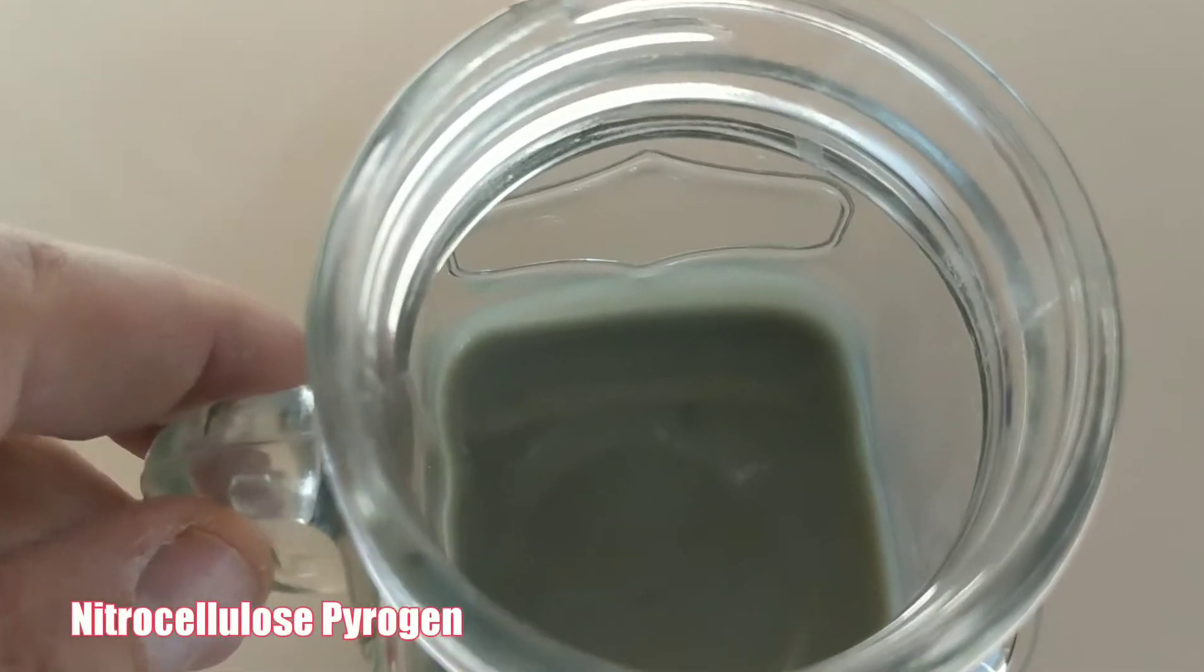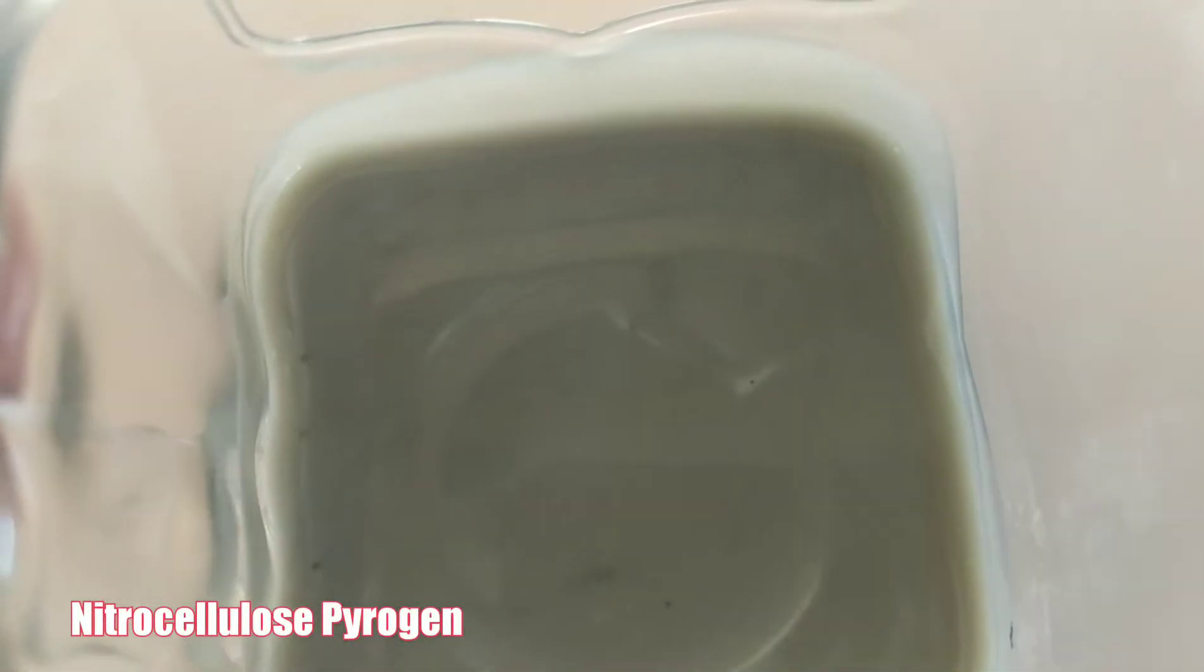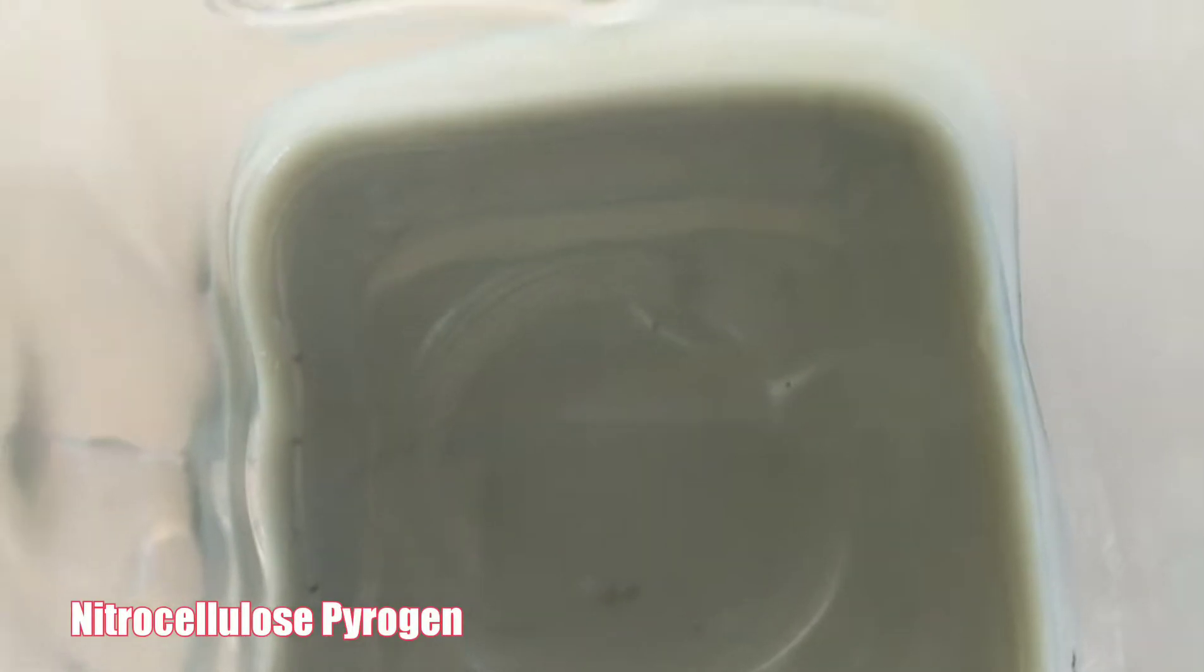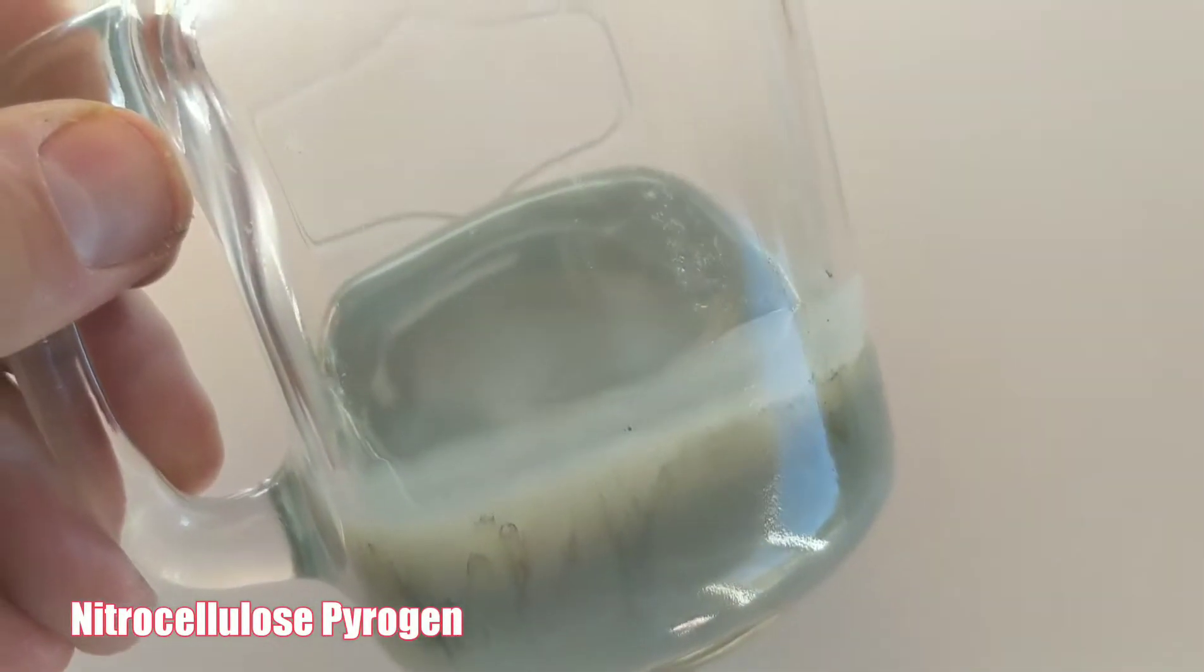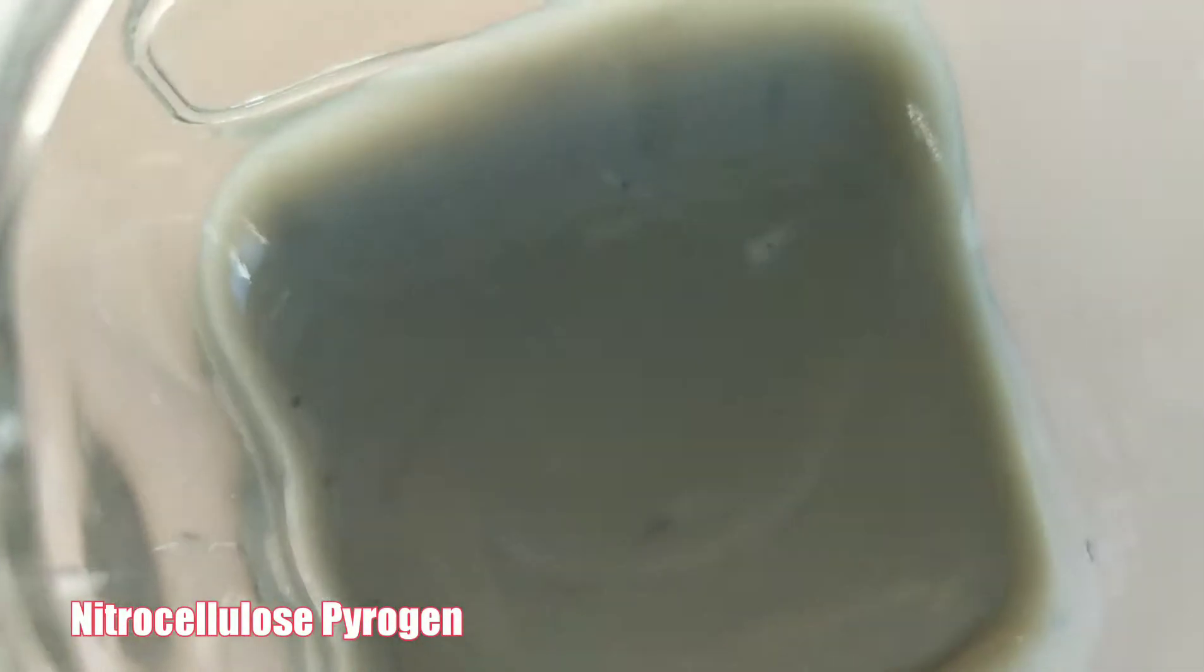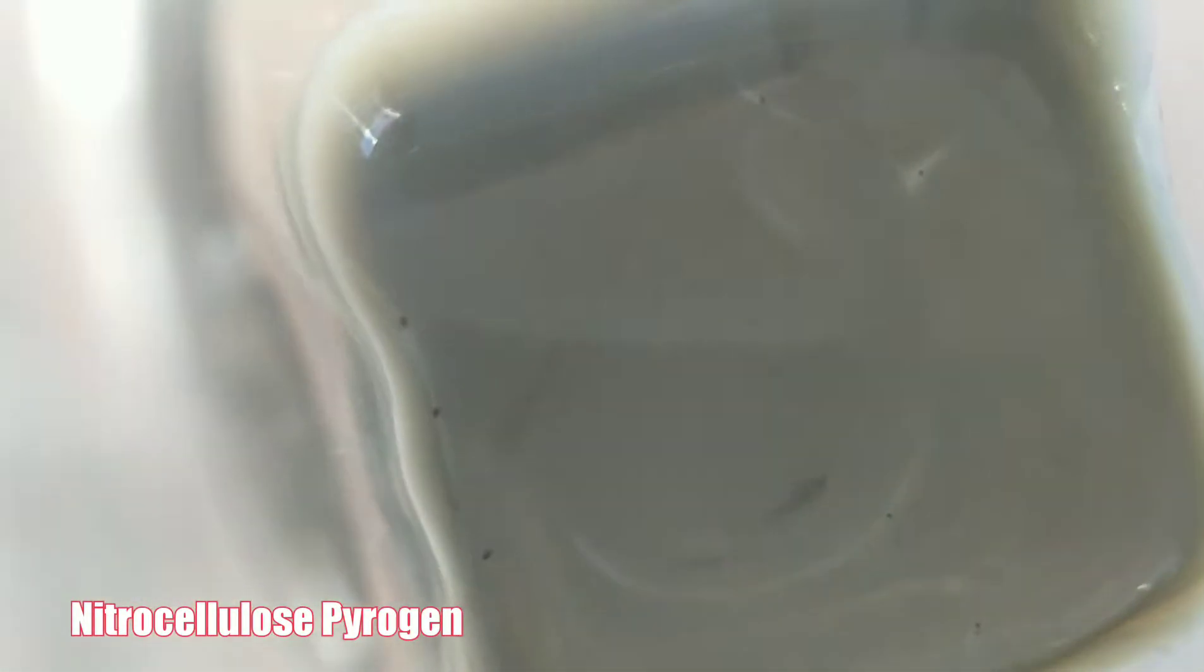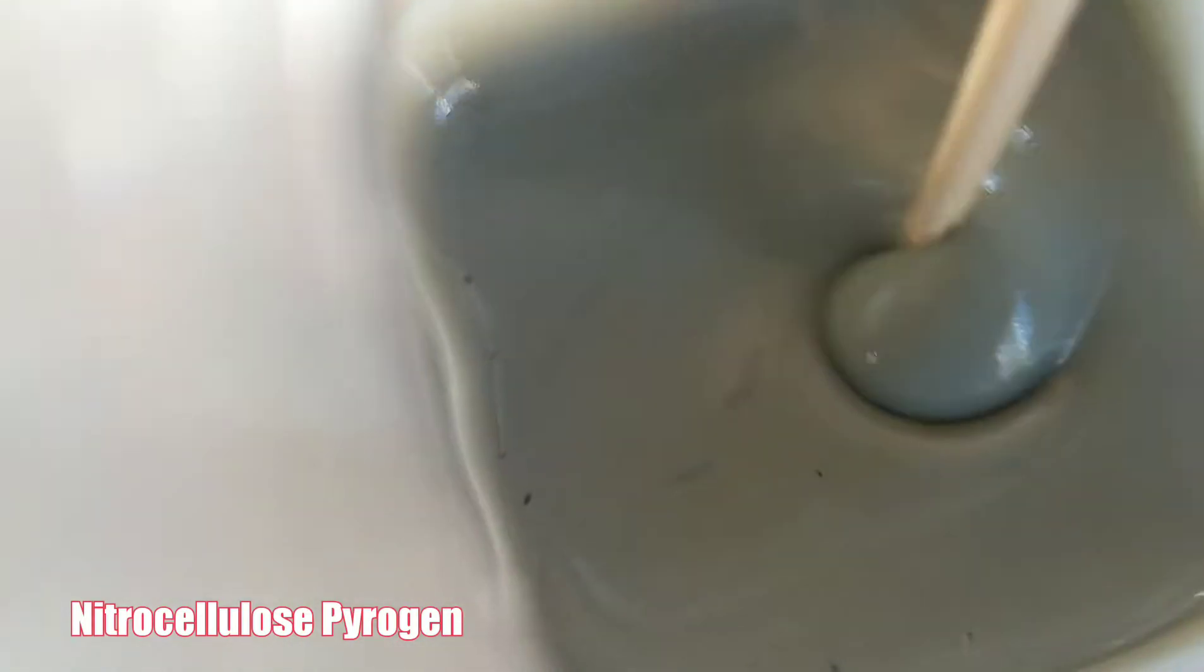Here we have our pyrogen, which is made and used for rocket igniters. It's real thick, thicker than Elmer's glue. I've been making this for a couple of days.